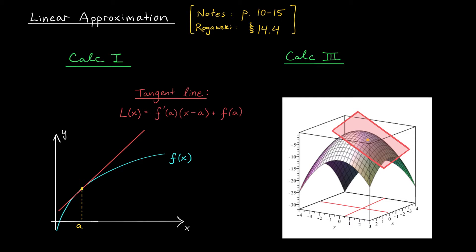To answer that question, let's think back to Calc 1 when we were dealing with a tangent line. I mentioned that the tangent line plays an important role in approximation. If we can find the tangent line at some point x equals a in the domain, then we can use that line to approximate the values of our function at points nearby.